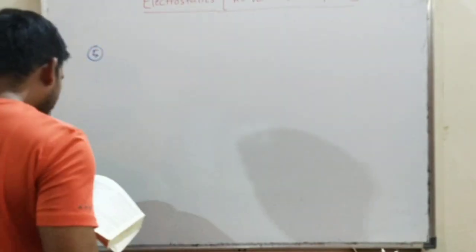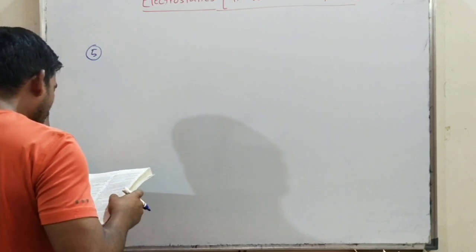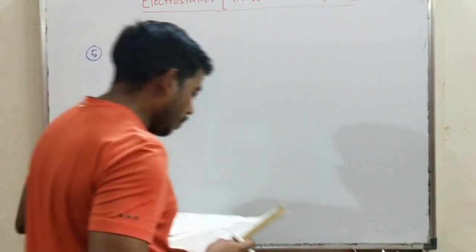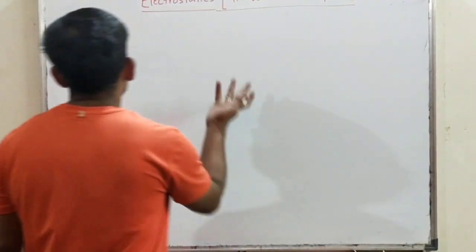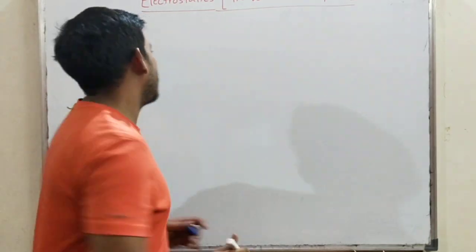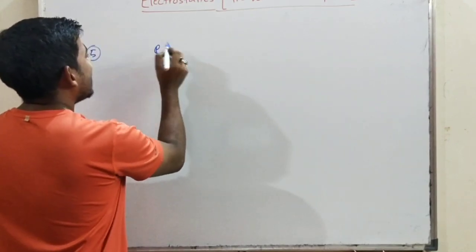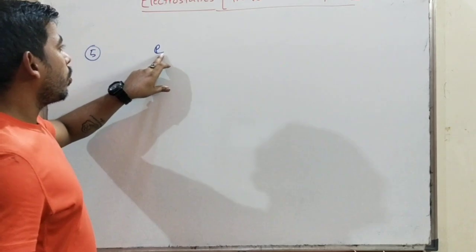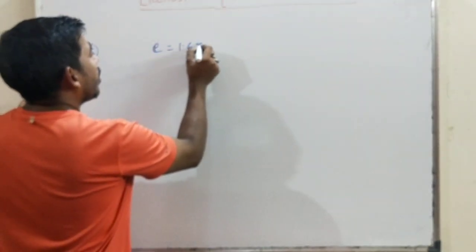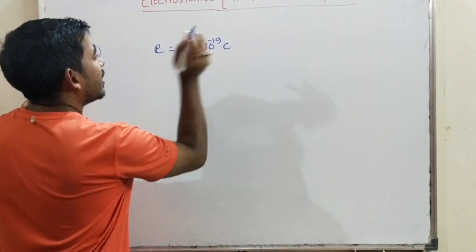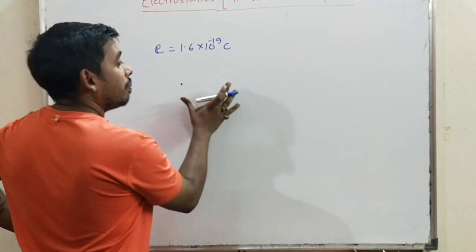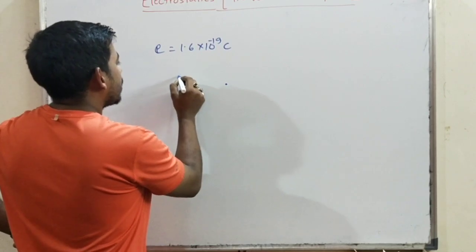Question number 5: Find the electric force between two protons separated by a distance of 1 fermi. Proton charge e = 1.6 × 10⁻¹⁹ coulomb. Two protons, each with charge e.